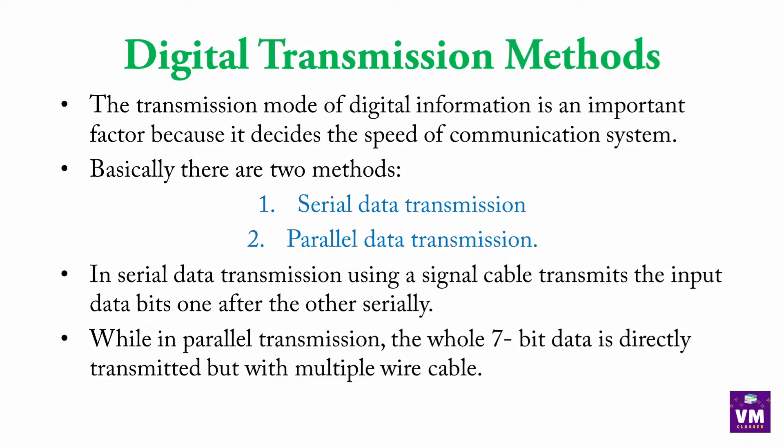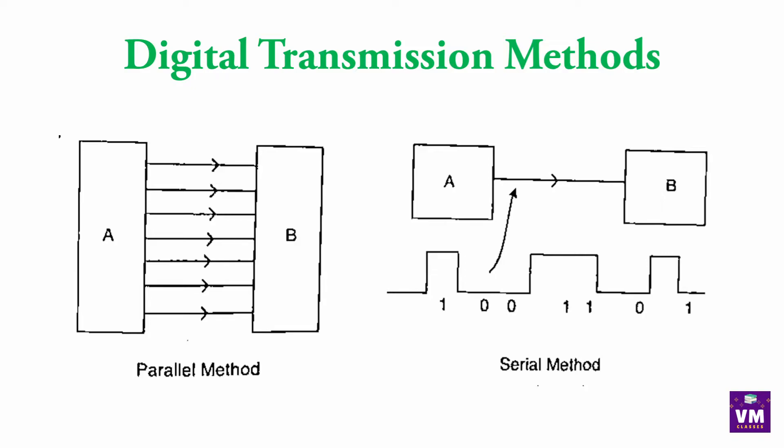While in Parallel Transmission, the whole 7-bit data is directly transmitted but with multiple wire cable. Parallel में एक साथ, यानि कि multiple cables use करके हम data को transmit करते हैं। ये figures देखो — first figure में A से B में data transfer हो रहा है, जहाँ multiple wires लगे हैं जो एक दूसरे को parallel में connected हैं। इसलिए इसे parallel method बोलते हैं, क्योंकि एक साथ बहुत सारे wires से हम data transmit कर रहे हैं।